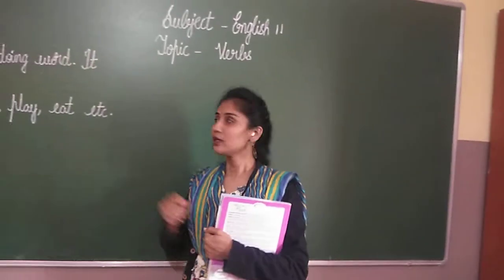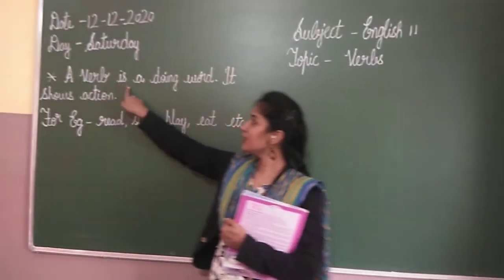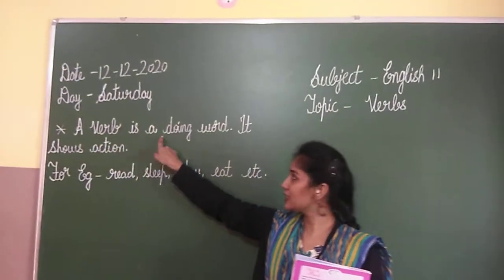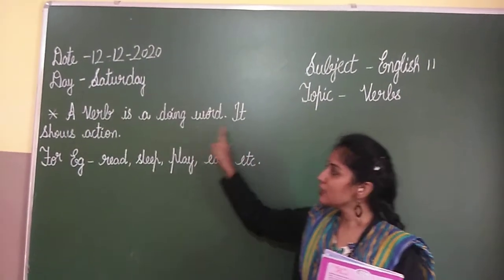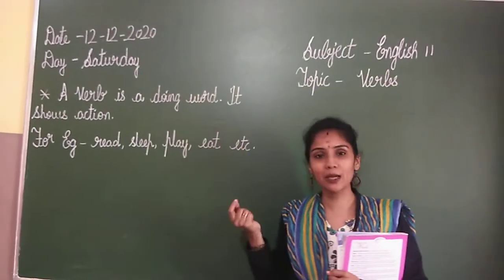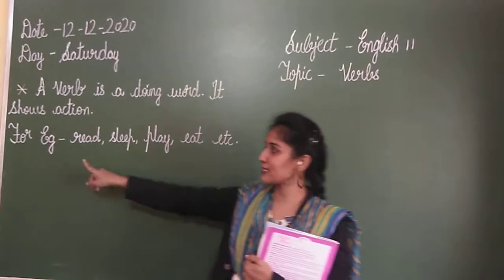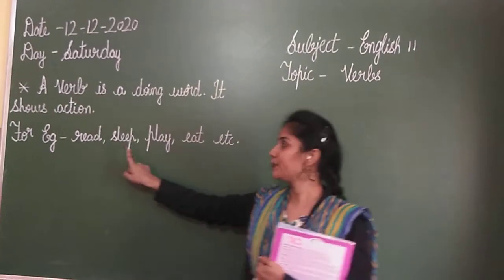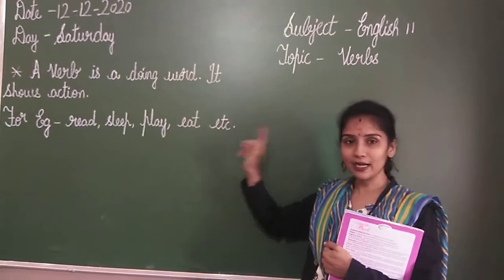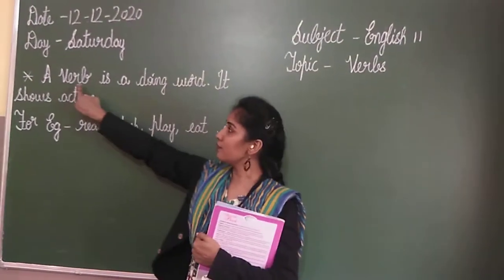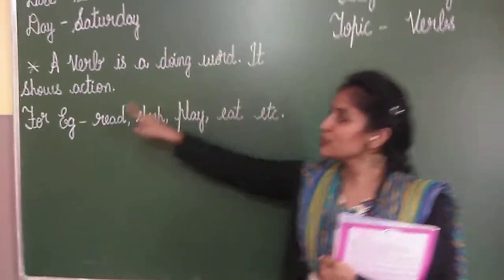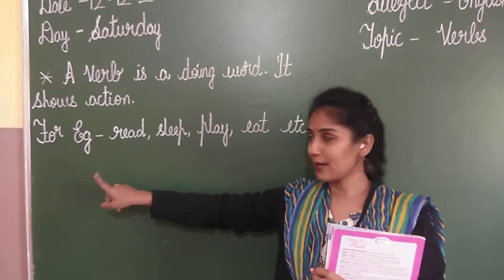What is a verb? A verb is a doing word. It shows action. When you are doing something, it shows action. For example: read, sleep, play, eat, etc. I will repeat, children. A verb is a doing word. It shows action. For example: read, sleep, play, eat, etc.